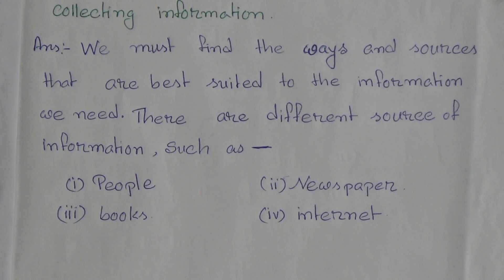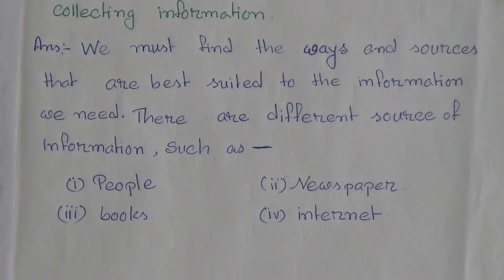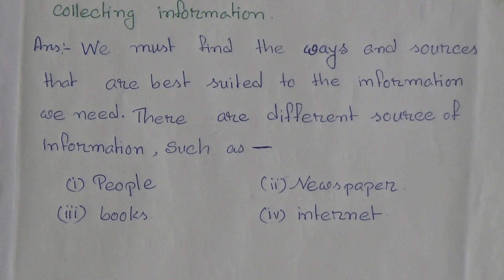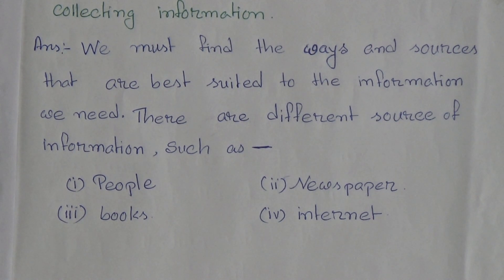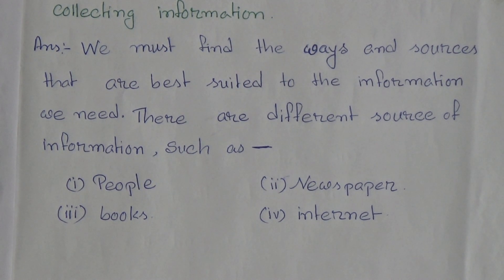After discussing these question answers, we can say that we can get information from different sources. The main sources are newspaper, television, people, books, and also the internet. In this way we can collect information. Now we will discuss broad question answer.